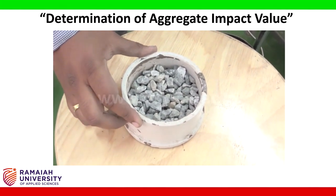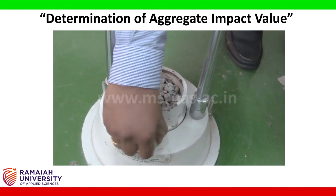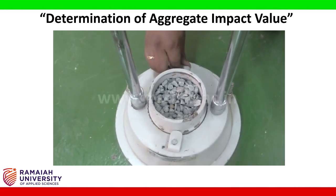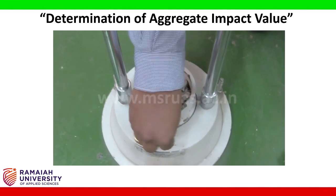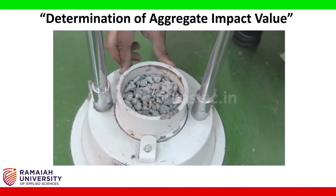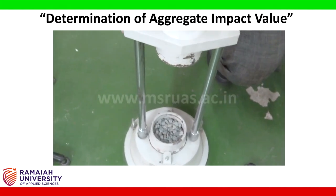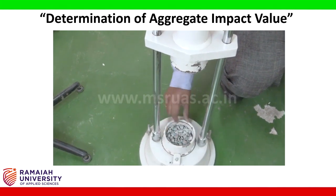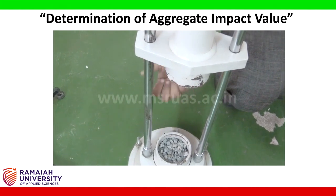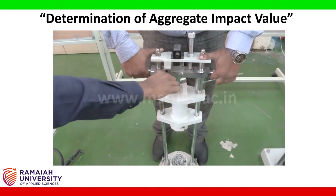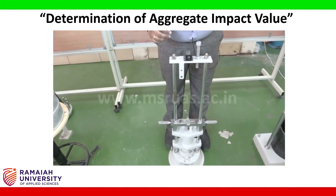Now the testing cylinder with aggregates is placed on the aggregate impact testing machine. There are two locks, and we tighten the screws to ensure it is locked. The testing mold is exactly in the correct position. Please make sure that during operation no one places their hand on the mouth of the machine, as the impact load could crush your hand. We are going to lower the system and start giving impact load to the aggregate mass.